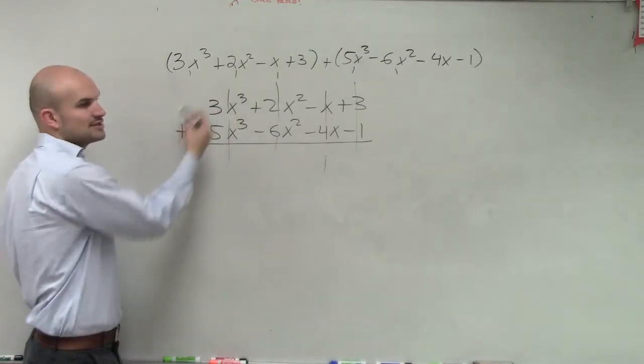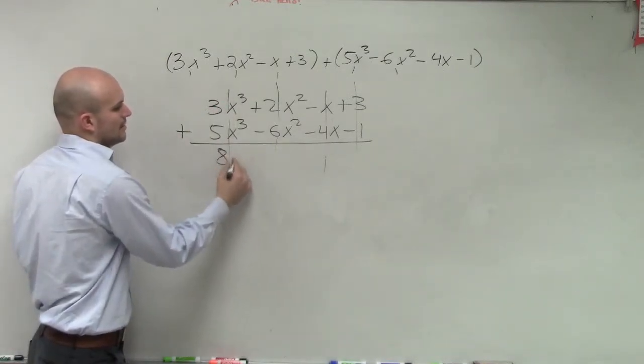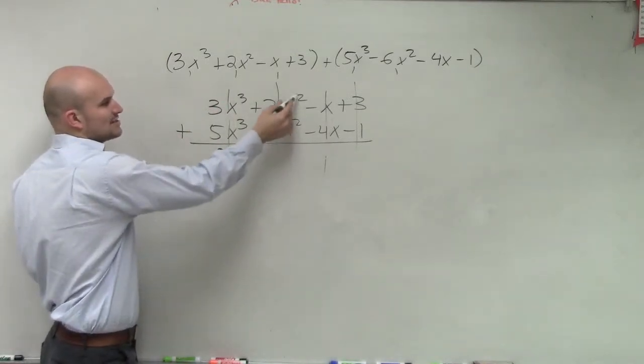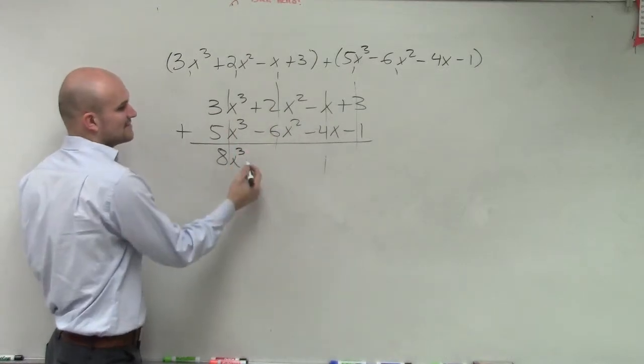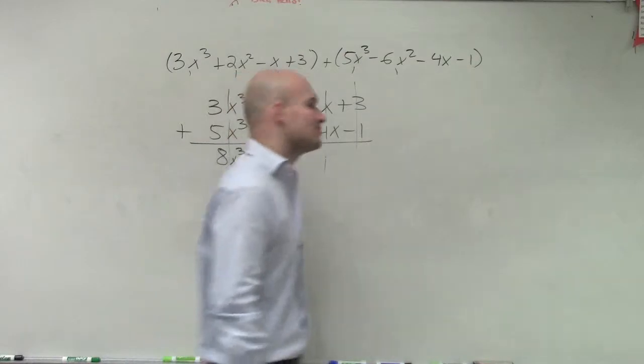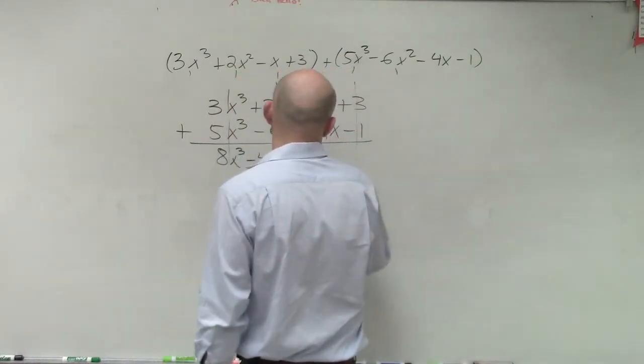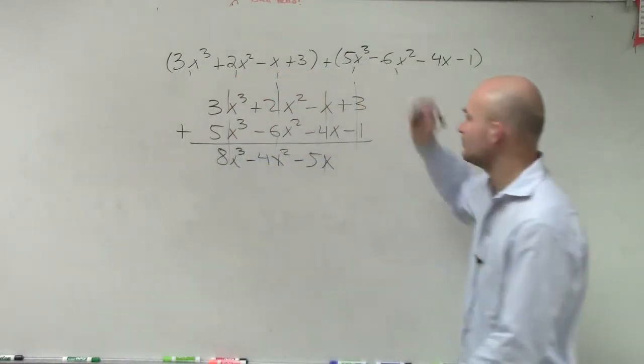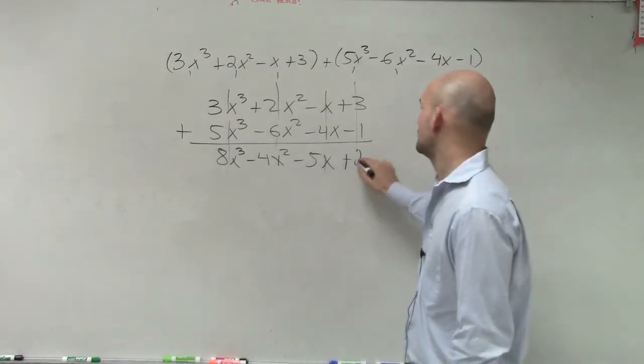5x cubed plus, or sorry, 3x cubed plus 5x cubed, 8x cubed. 2x squared plus a negative 6x squared is a negative 4x squared. Negative x plus a negative 4x, negative 5x. And 3 plus a negative 1, plus 2.